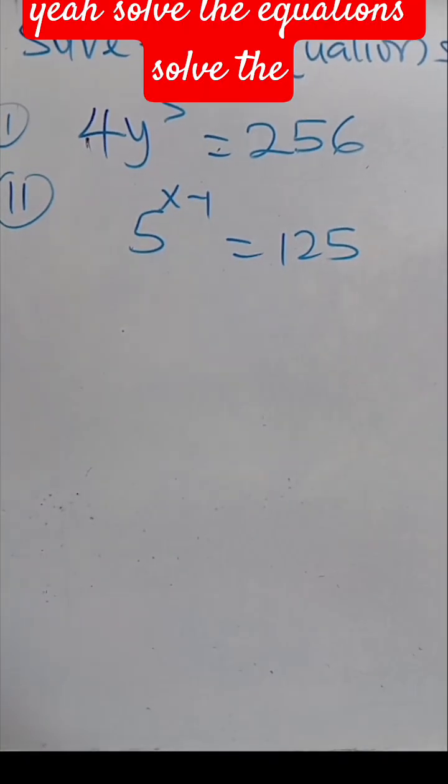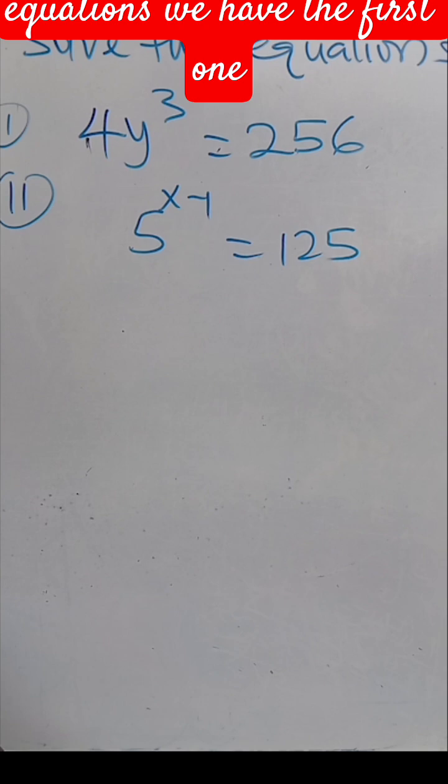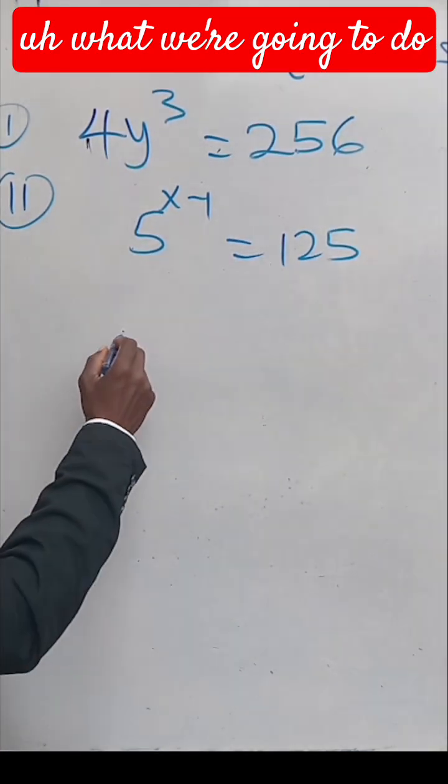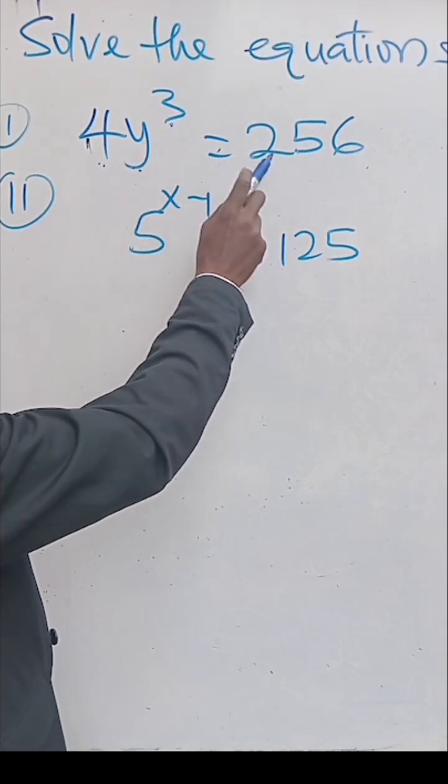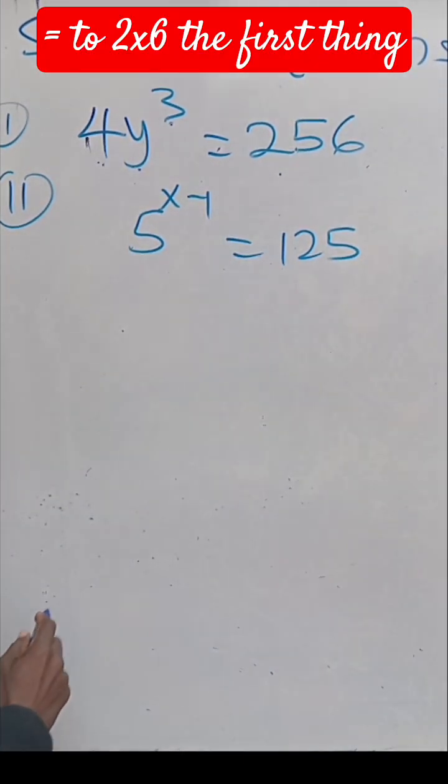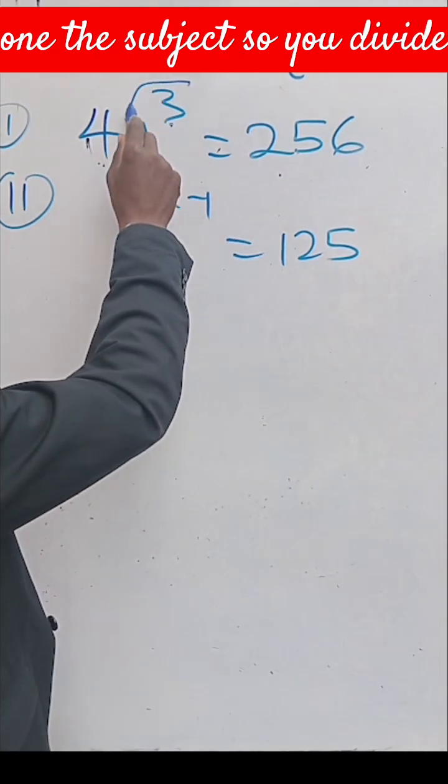Solve the equations. We have the first one: 4y³ = 256. The first thing to do is to make this one the subject.